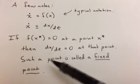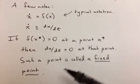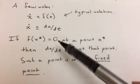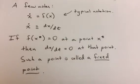And so the definition is such a point is called a fixed point. And so we've already seen this term, but this is really specifying that definition. A fixed point is a point x star such that f of x star is equal to 0.